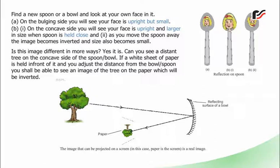Can you see a distant tree on the concave side of the spoon bowl? If a white sheet of paper is held in front of it and you adjust the distance from the bowl spoon, you shall be able to see an image of the tree on the paper which will be inverted.